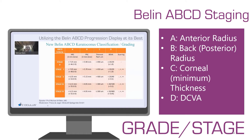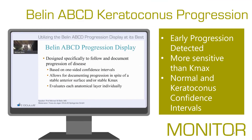There are five stages going from zero to four, and each anatomical layer — anterior, posterior, and corneal thickness — are individually graded. The Belin ABCD Progression Display is specifically designed to follow and document disease progression. It's based on a one-sided confidence interval, which allows for documented progression in spite of a stable anterior surface or stable K-max.